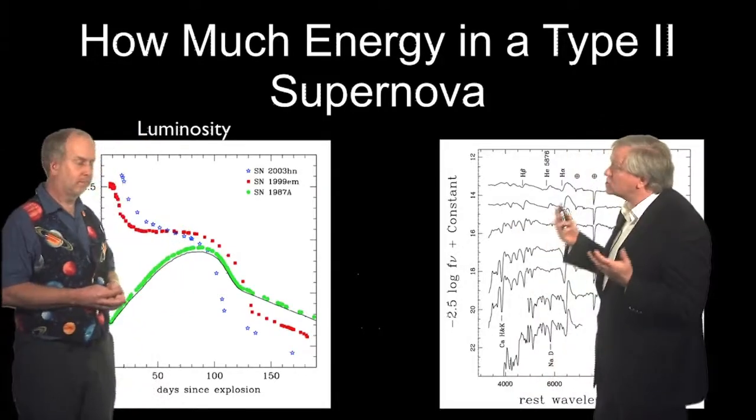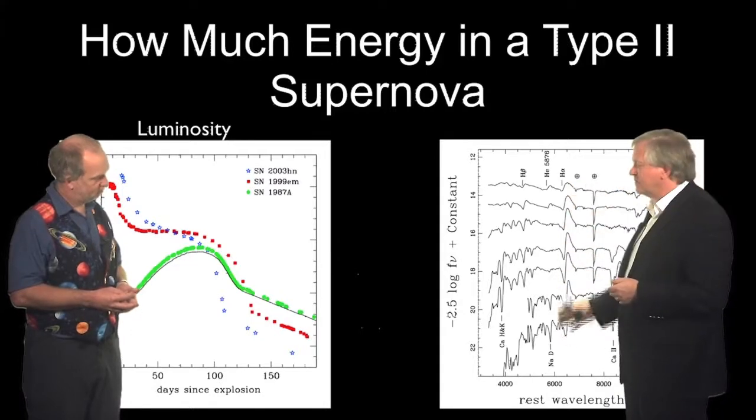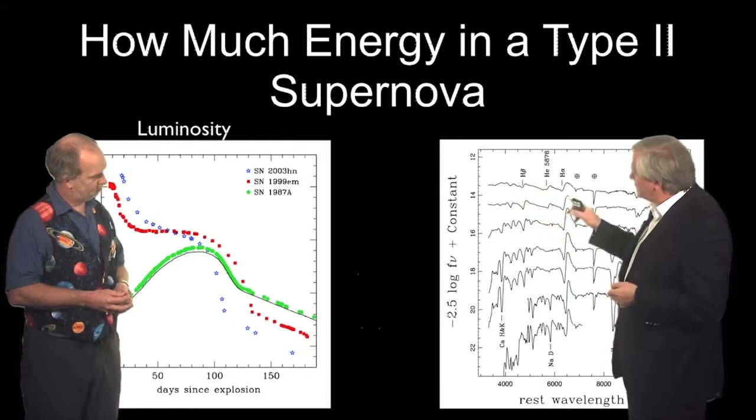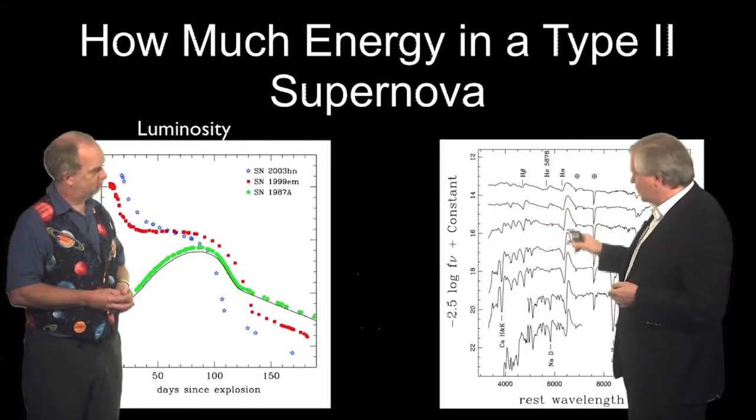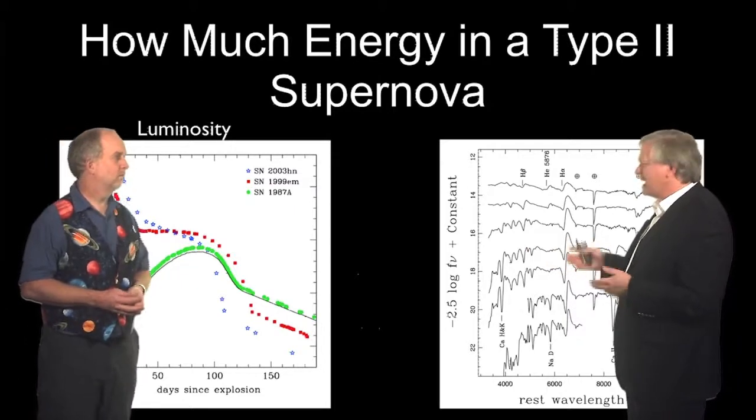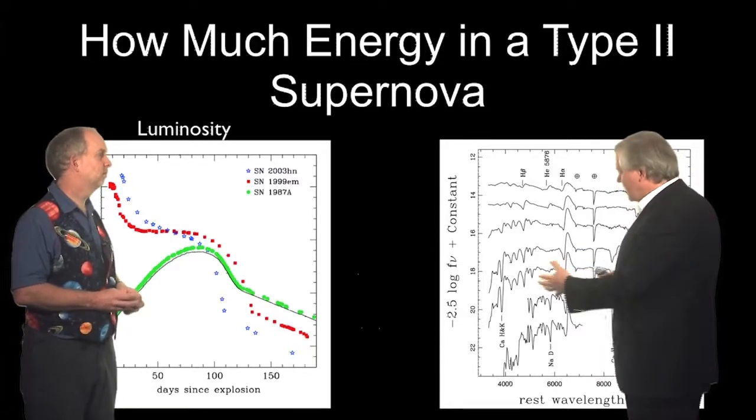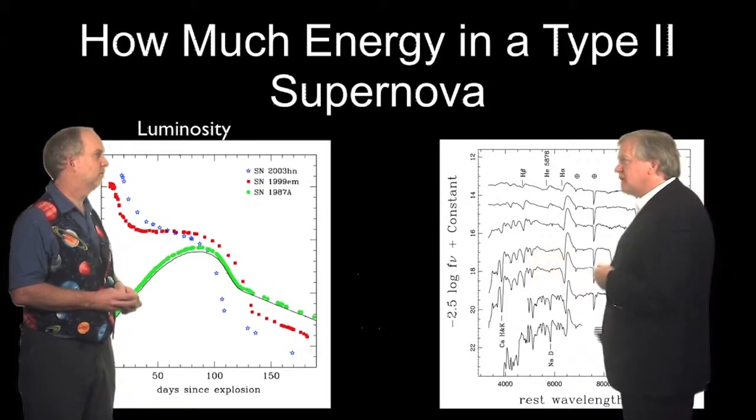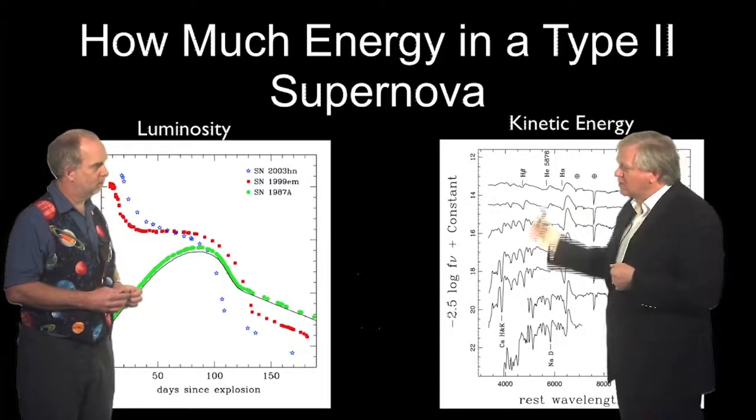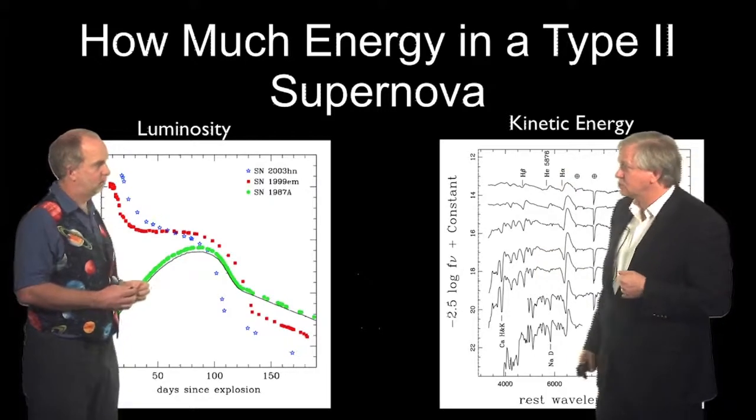And so we can go through and figure out how much kinetic energy there is as well because we have spectra of these supernovae. And this is hydrogen and helium and hydrogen again. And we can measure the velocity over time. And it turns out these supernovae expand at roughly 3,000 kilometers per second. And there's about 10 solar masses of hydrogen that's expanding at that fast. So we can calculate the kinetic energy.